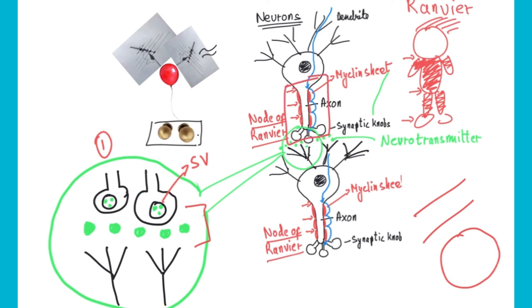Whereas the gray matter is basically the cell body. It's a cluster of the cell bodies, it's where all the cell bodies for the neurons are. That is why it appears gray in color and white matter appears white in color because of the myelin sheath.